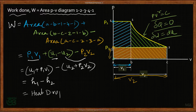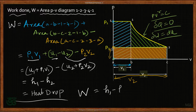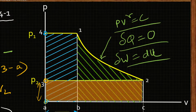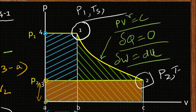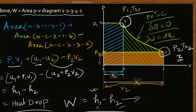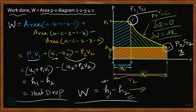Finally, the work done in a Rankine engine cycle equals the heat drop h1 minus h2. To calculate this, we need the enthalpy at state 1 — which depends on whether the steam is superheated, dry, or wet — requiring pressure p1, saturation temperature Ts1, and other conditions from the steam table. For h2, we need pressure p2, saturation temperature Ts2, and dryness fraction. From these we calculate work done during one Rankine engine cycle.